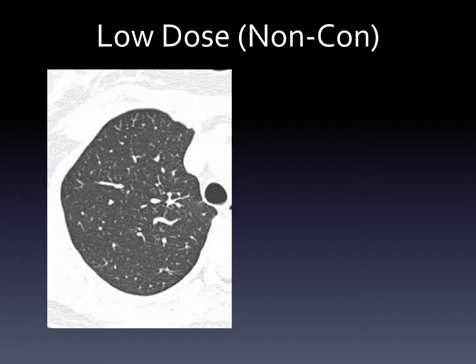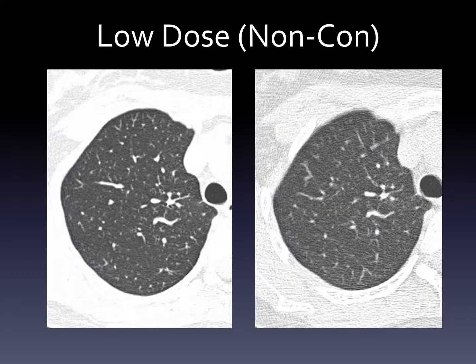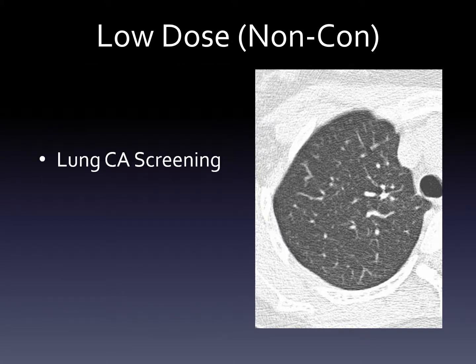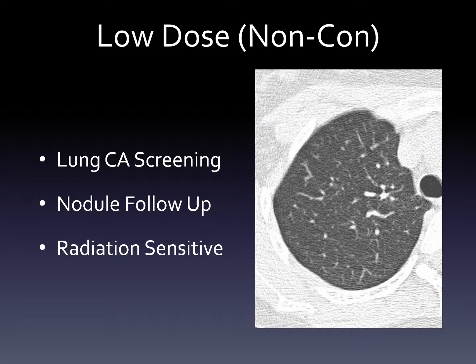Another type of chest CT — usually without contrast, but not necessarily — is where we do the scan with as little radiation as possible. On the left is a standard chest CT; on the right is one using very little radiation. The picture doesn't look quite as good, but we can still see the different structures. This is good for lung cancer screening, looking for a nodule in the lung to see if it's changed, or if a patient is particularly sensitive to radiation — for example, children — where we want to use as little radiation as possible.